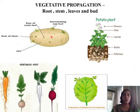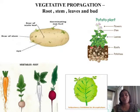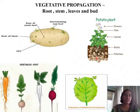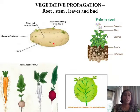Let us take one example and understand. Here we have a potato. A potato is called an underground stem. You can see the picture of a potato plant, and you can see potatoes are growing inside the soil. Therefore it is called an underground stem.